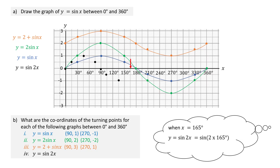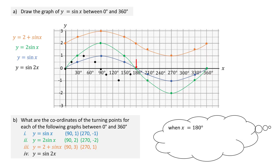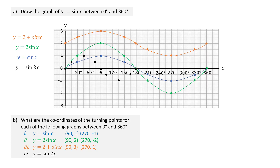When x equals 105, sine 2x is sine 210, which gives the point (105, −0.5). When x equals 135, sine 2x is sine 270, giving the point (135, −1). When x equals 165, sine 2x is sine 330, which is the point (165, −0.5). When x equals 180, sine 2x equals sine 360, which is the point (180, 0). Joining these points gives one complete cycle of y equals sine 2x. Completing a further cycle completes the graph between 0 and 360 degrees, where the turning points are (45, 1), (135, −1), (225, 1) and (315, −1).